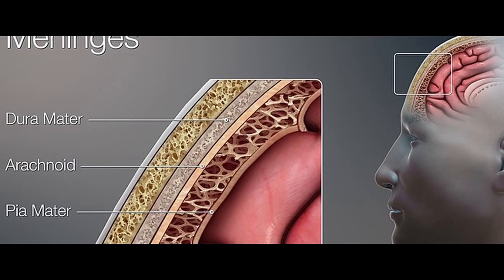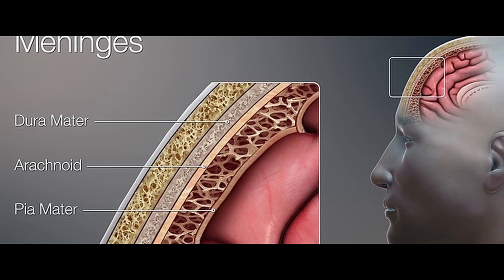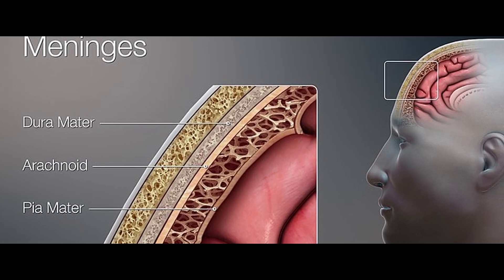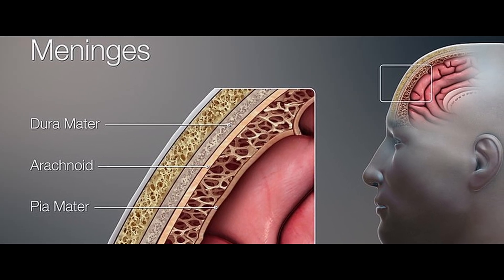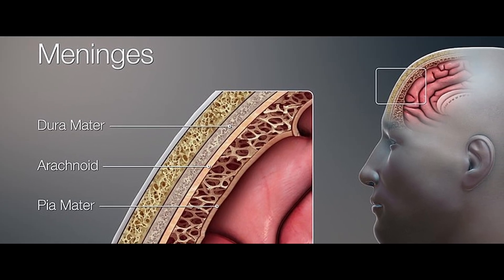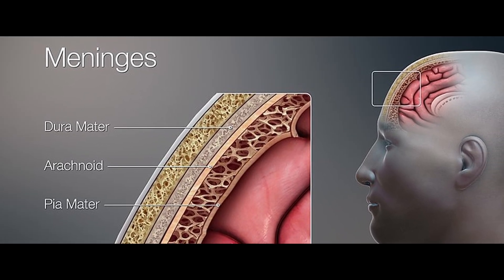Our method is, we have three protective layers: Dura mater, Arachnoid mater, and Pia mater. We cover these three layers.